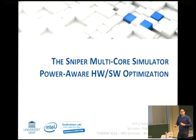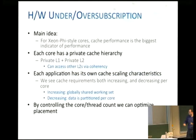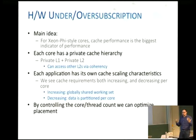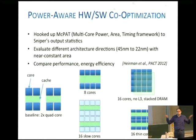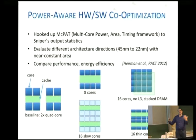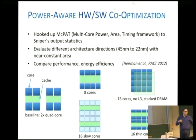I want to touch on some of our research in hardware-software optimization. The main idea is: if you have Xeon Phi-style cores, is there a way to do hardware-software optimization to achieve better performance? You've got lots of options — small cores, stacked RAM, big cores — and there's a large variety today with Xeon Phi and GPUs, making it even more complicated to understand. We use Sniper to understand the complexity and make it easier to determine the right solution.